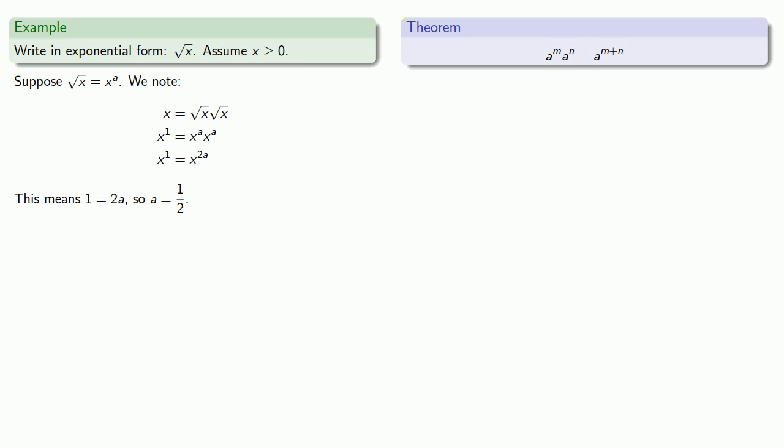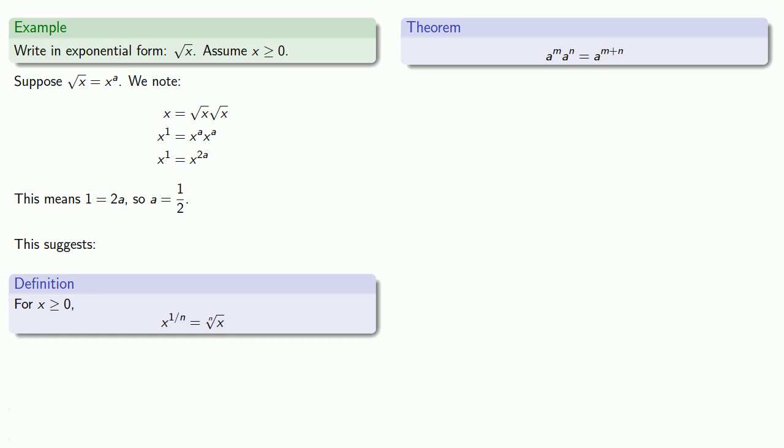And this generalizes. For reasons that will become apparent a bit later, we do have to assume x is greater than or equal to zero, but in general, x to power one over n can be defined to be the nth root of x.